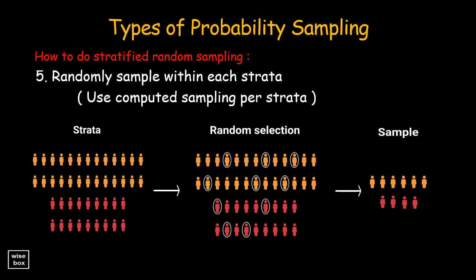Because the groups are more homogeneous within group than across the population as a whole, we can expect greater statistical precision and less variance. And because we stratified, we know we will have enough cases from each group to make meaningful subgroup inferences.